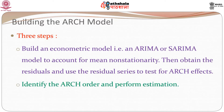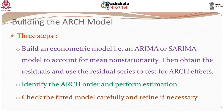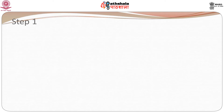The second step is to identify the ARCH order and perform estimation. If we find that there is some ARCH effect, we need to find the order of the ARCH model and then estimate the parameters. The third step is always a step we have in time series, because alternative models would be very close to each other. So we need to go back and check whether the fitted model is good enough and refine it if necessary. Let us look at the three steps one by one.